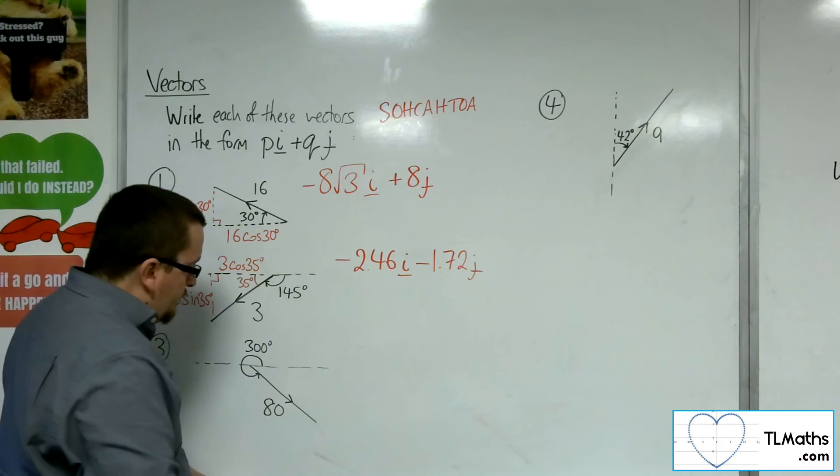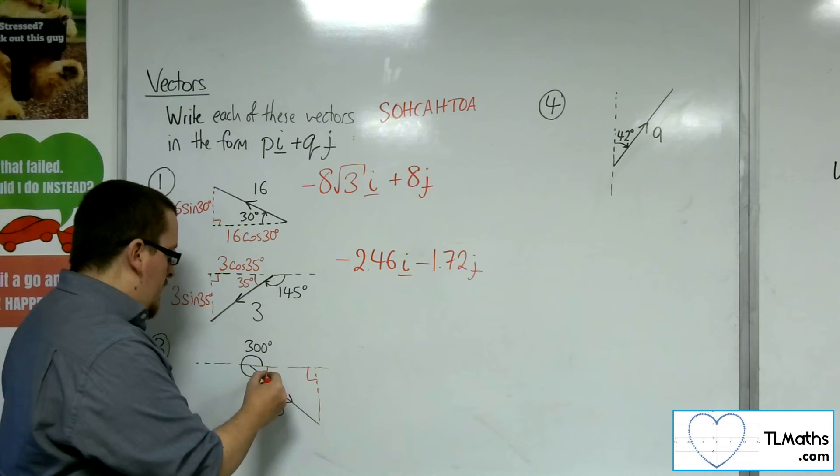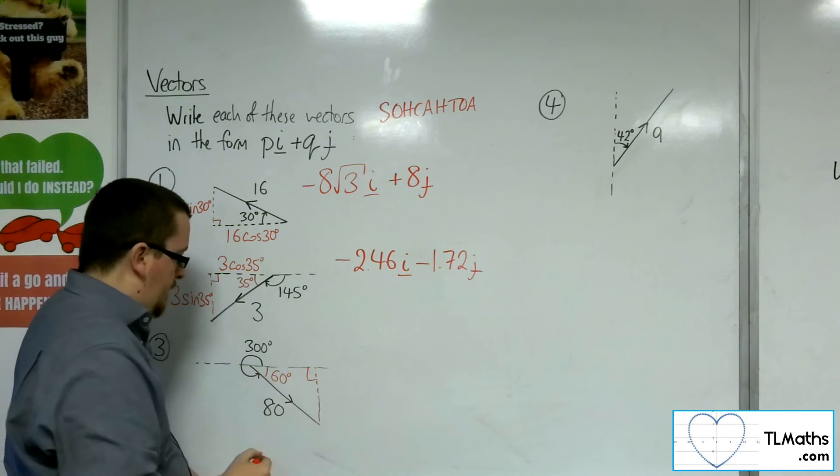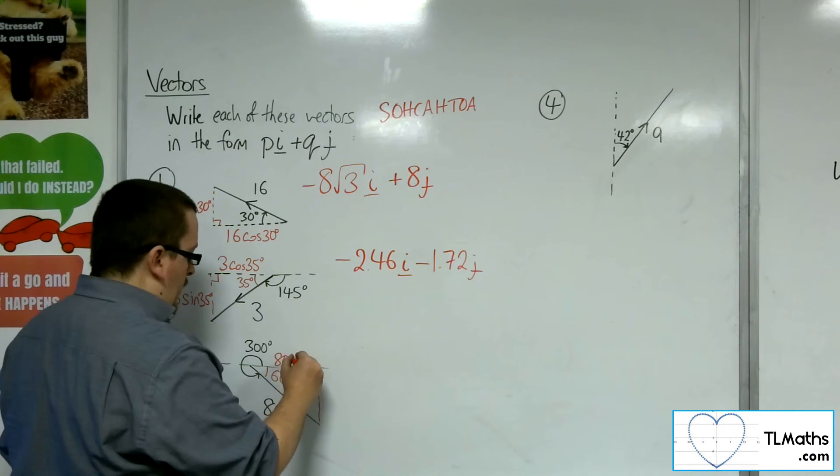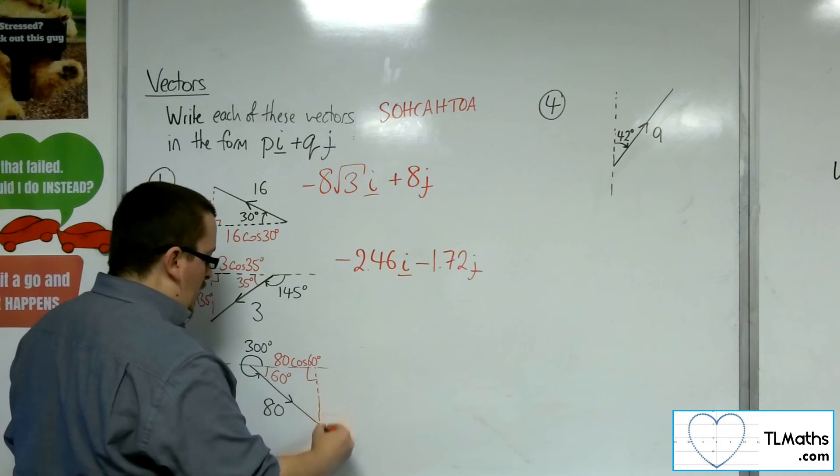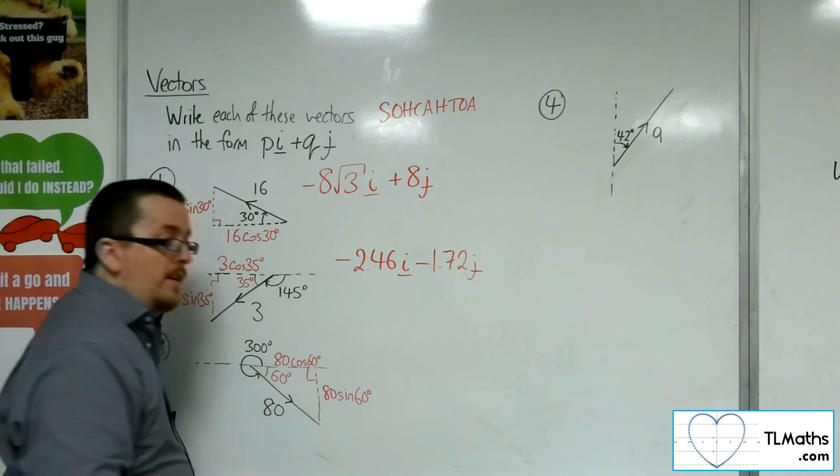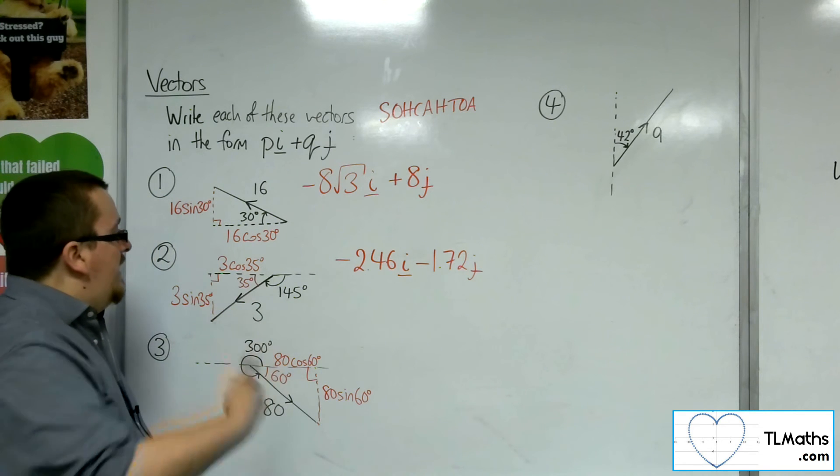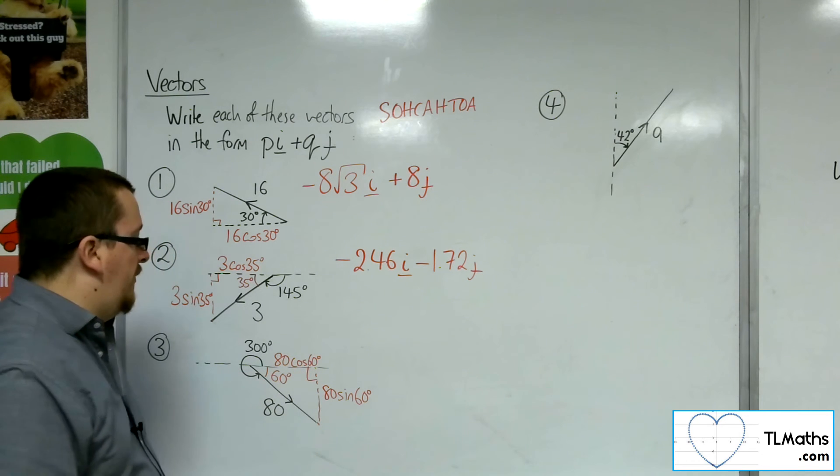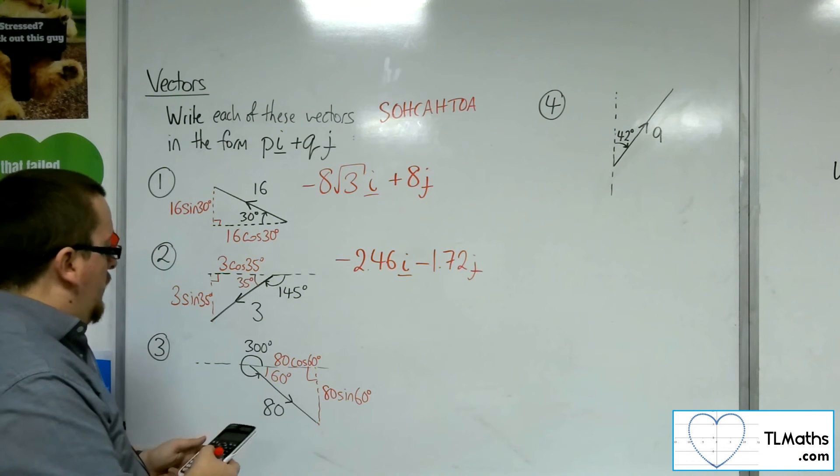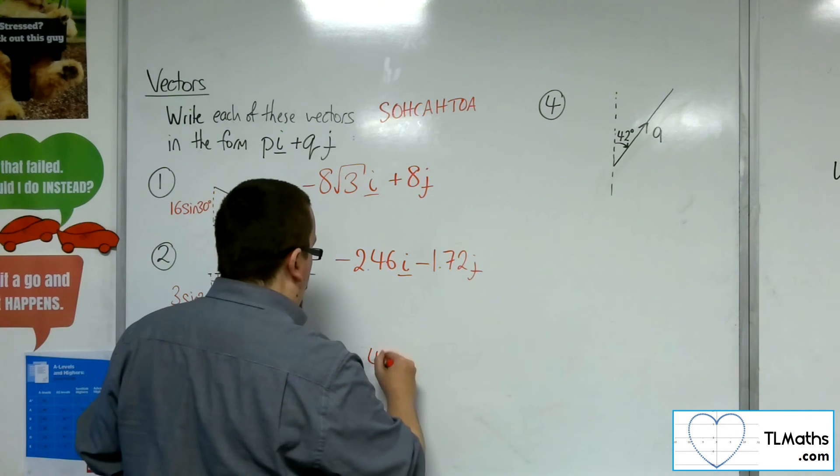Number 3, make a right-angled triangle. If that's 300, then that's 60. So the adjacent side will be 80 cosine 60. And the opposite side will be 80 sine 60. So you should get into the rhythm of thinking that the adjacent side uses cosine, the opposite side uses sine. So we've got 80 times cosine of 60, so that's 40. So 40i, because we're going in the positive direction.